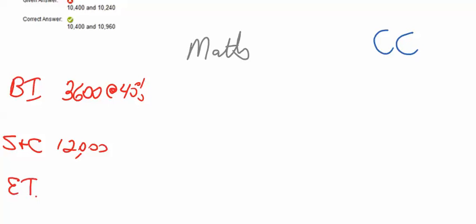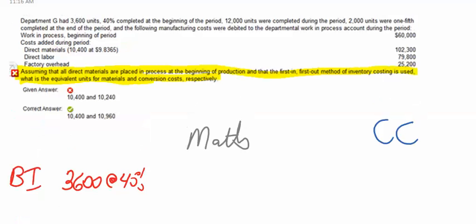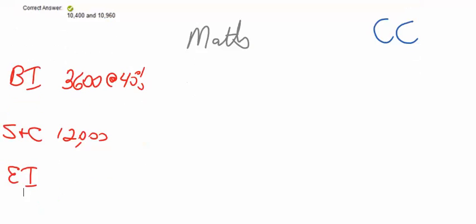And then I'm going to have my ending inventory, which says the ending inventory, we had 2,000 units, one-fifth. So, 2,000, one-fifth complete. Now, that's as to conversion costs.